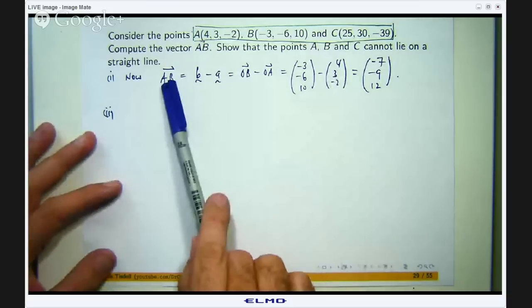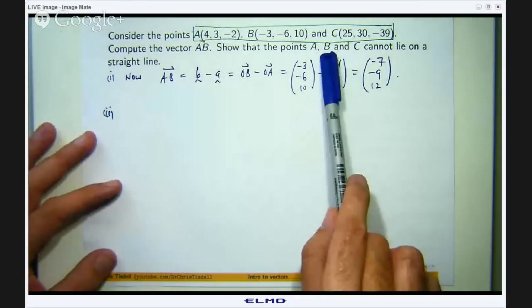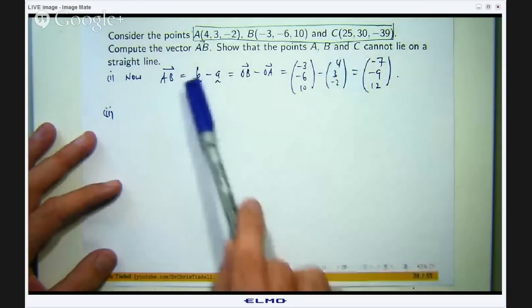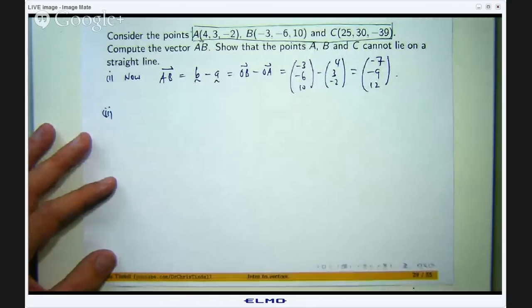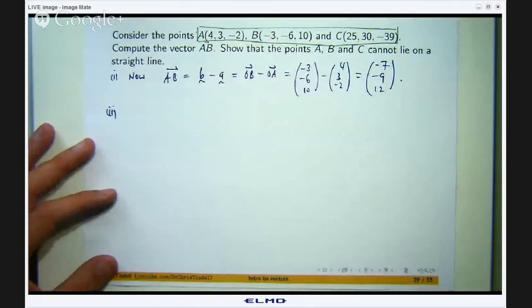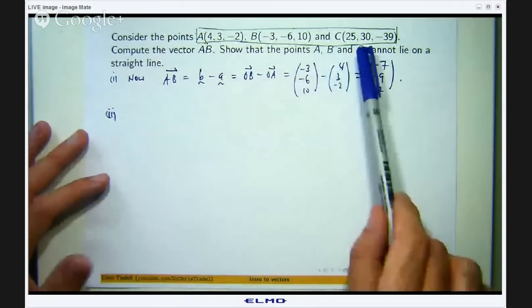So the important thing is that the two vectors involved share a common point. So I have already computed the vector AB, if I compute the vector BC then the common point is B. If I compute the vector AC the common point would be A. So I am going to compute the vector BC and then show that AB and BC are not parallel.